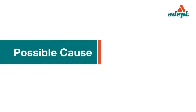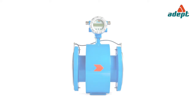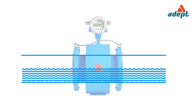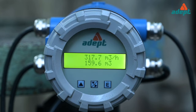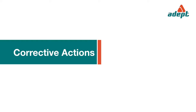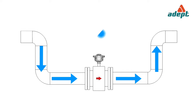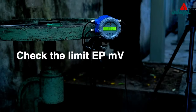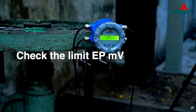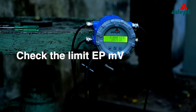Empty pipe indicated. Possible causes: flow tube is not full, or the empty pipe limit is set to a low value. Corrective action: confirm installation is correct and that the flow tube is full, then check. Check the limit EP MV.